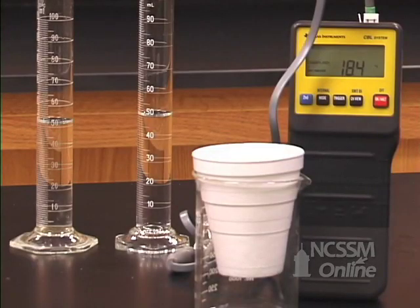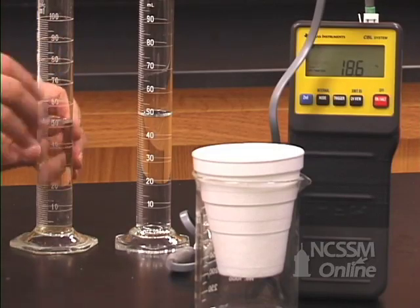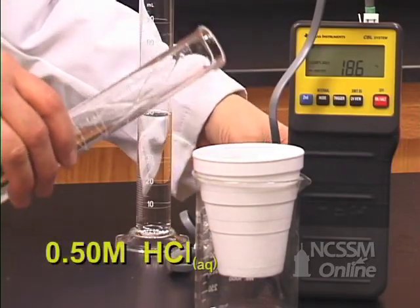In the second part of our Hess's Law lab, we are going to measure the heat of neutralization of an aqueous solution of sodium hydroxide with an aqueous solution of HCl. We place the HCl into the calorimeter.